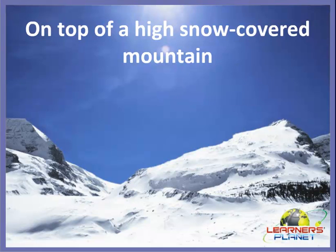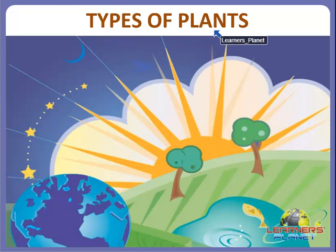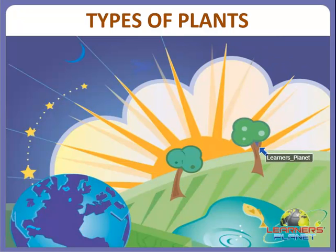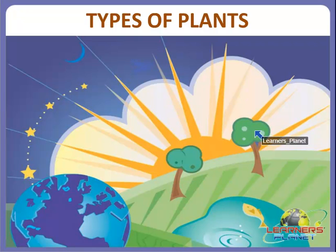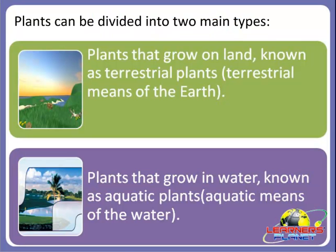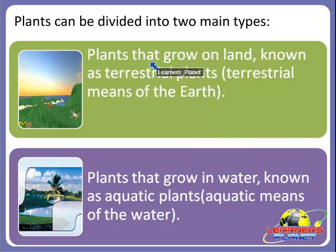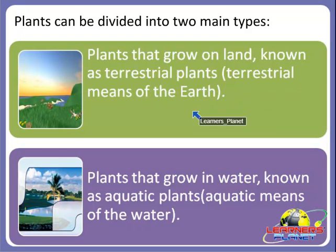Now let's study about the types of plants. There is a variety of plants that grow on earth, so wherever you go, you can see plants around you. They can be divided into two main types. The first one is the plants that grow on land, which are known as terrestrial plants — terrestrial means of the earth.